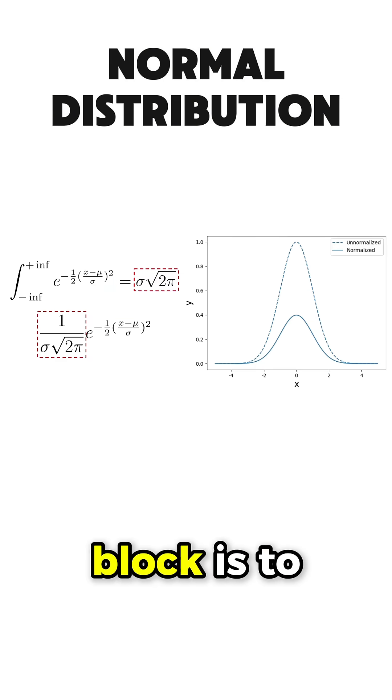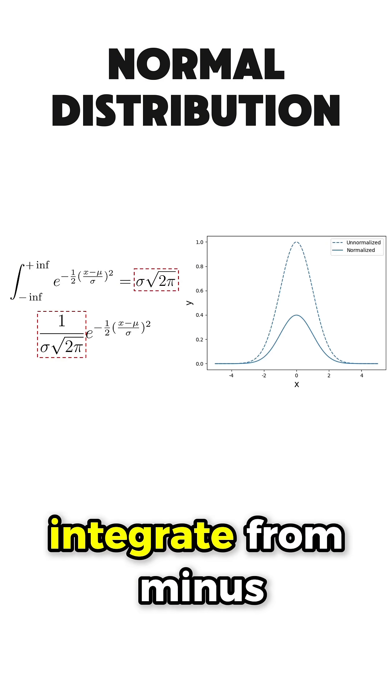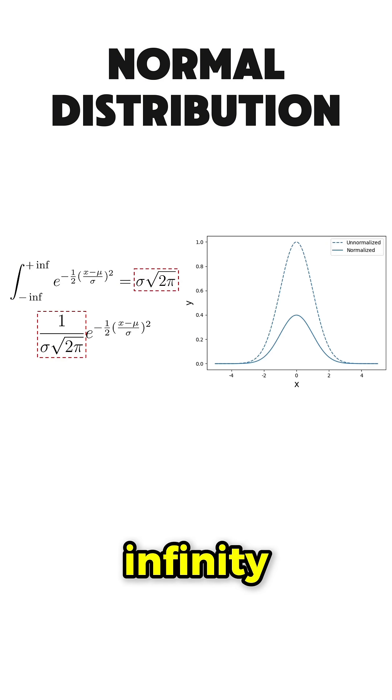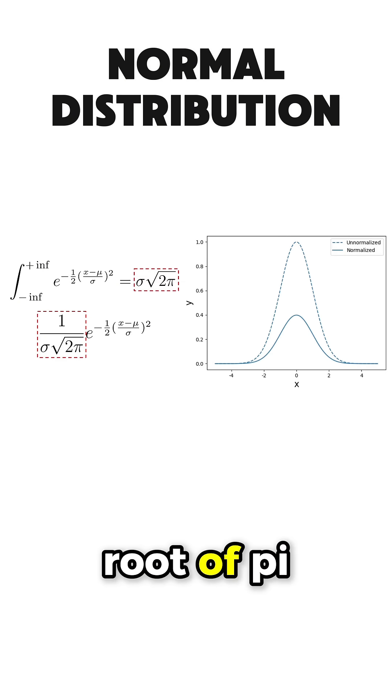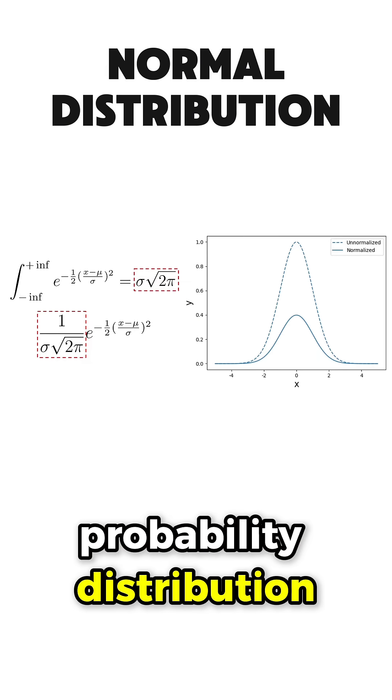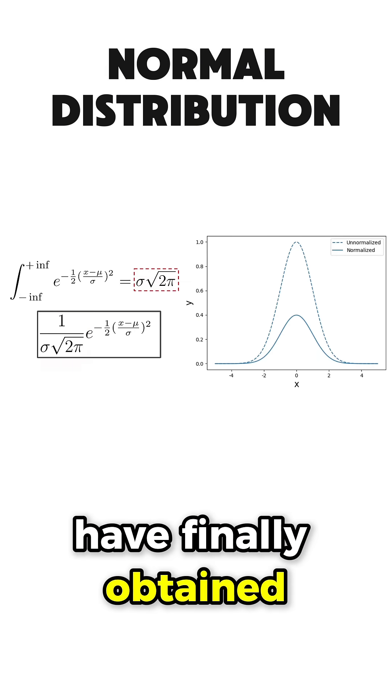The last building block is to normalize our equation and make it a probability distribution. Because when you integrate from minus infinity to plus infinity, we don't obtain 1, but sigma multiplied by the square root of pi. So we have to divide by this term to obtain a probability distribution. And thus, we have finally obtained a normal distribution.